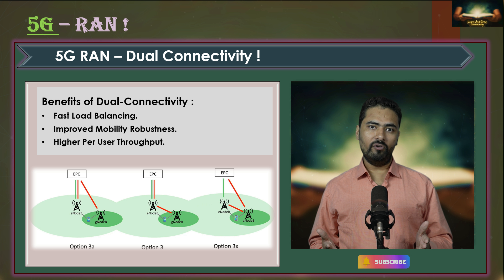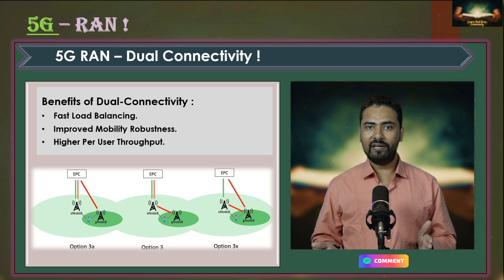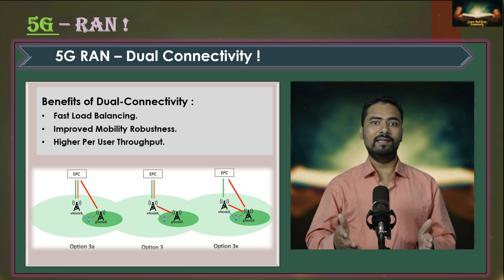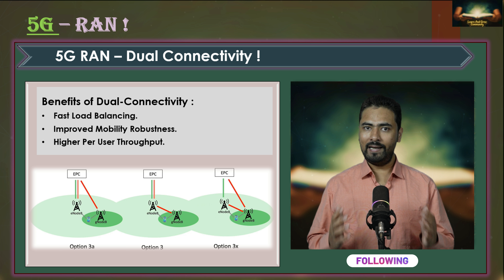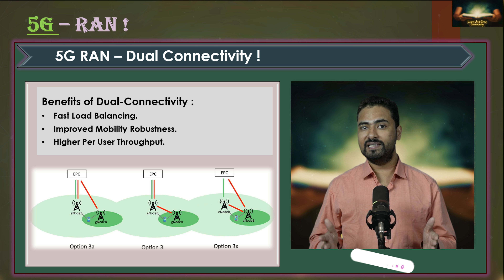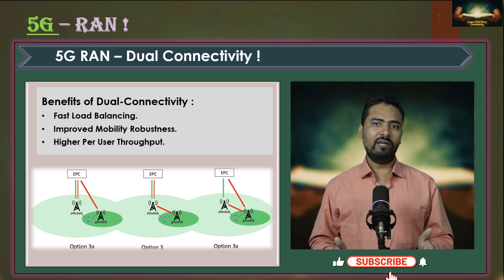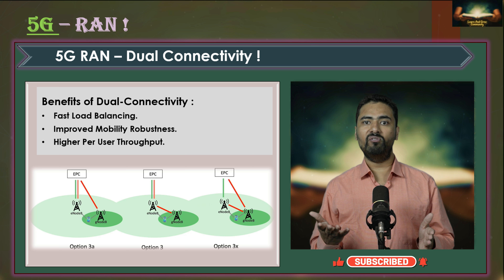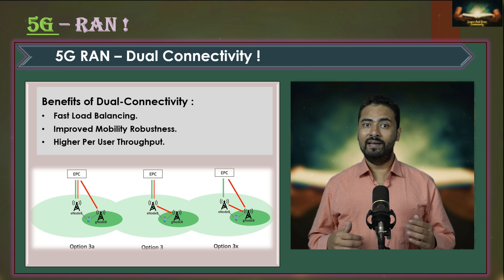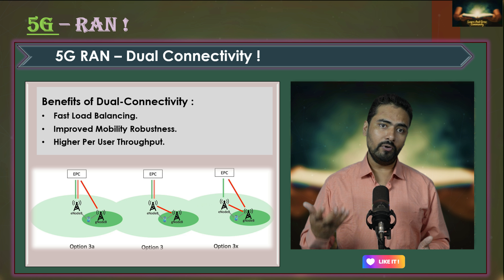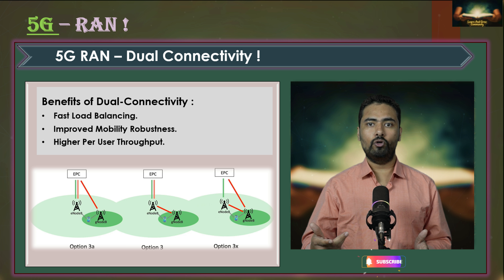Dual connectivity offers multiple benefits to improve network performance and user experience. With dual connectivity the UE connects to both nodes at the same time, enabling fast and efficient load balancing across the network. NR coverage from millimeter wave bands may be inconsistent due to bad propagation characteristics, so dual connectivity can enhance mobility and robustness, ensuring more stable connections even in challenging environments. Additionally, dual connectivity helps achieve higher data rates and per-user throughput by using both radio access technologies simultaneously.